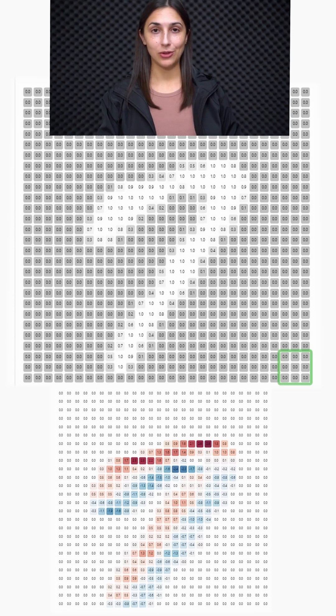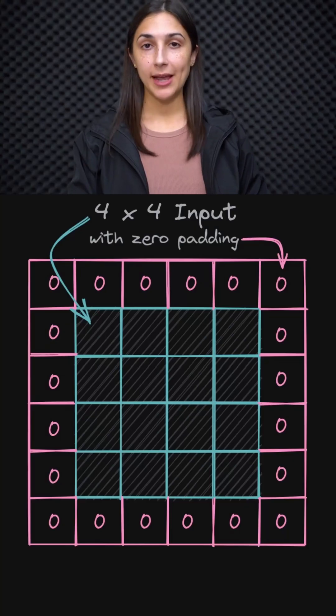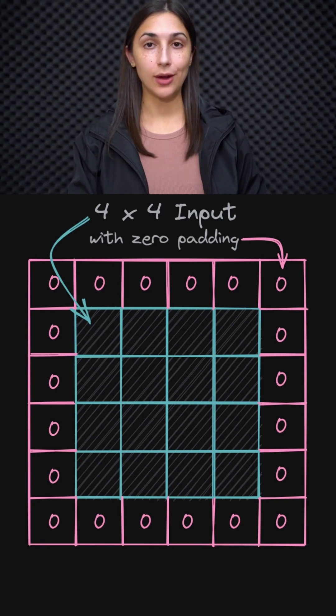So to combat these potential issues, we can make use of a technique called zero padding. Zero padding is a technique that we can use to preserve the original input size as it's passed through to convolutional layers.